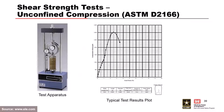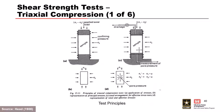The unconfined compressive strength test is straightforward: no confining pressure, just add axial load until failure. You get a peak strength with no post-peak behavior, and no confining pressure. It's cheap and fast, so you can run many samples, but it's not typically used for higher-level stability analyses.